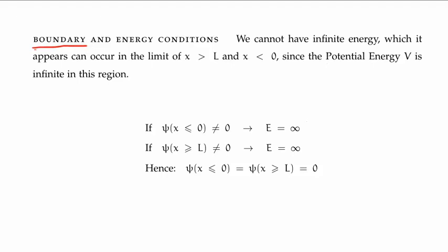So the boundary conditions are as follows. We know for physical reasons that we cannot have infinite energy, and this seems to occur in the region where x is greater than L and x is less than 0, because the potential energy in these regions is infinite. So that can be said mathematically with these statements here, and that gives us our boundary conditions.